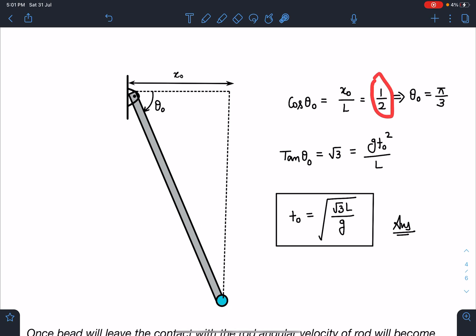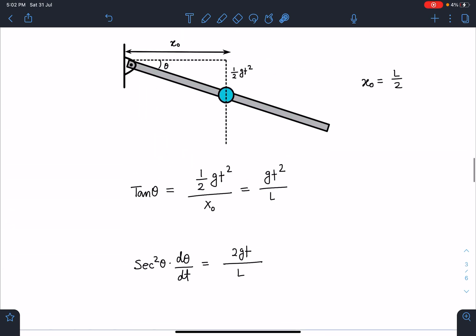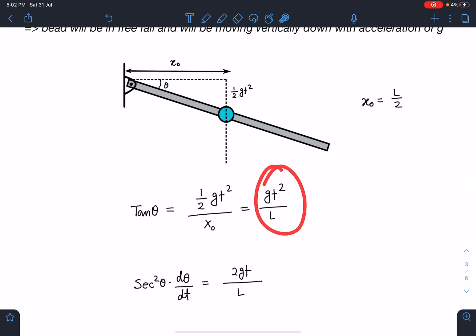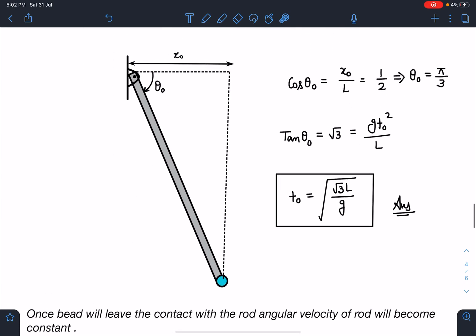cos θ = x/L, this distance is L, so x/L, and a very nice answer will come which is 1/2. So θ = π/3. When this angle is 60 degrees, you can say tan θ = √3. I am substituting the value from the previous equation: gt²/L = √3. I'll be getting the time up till this moment - this is the moment of t = t₀ when bead is about to leave the contact with the rod. That moment is t₀ = √(√3 L/g).